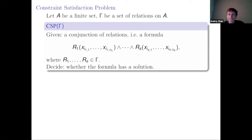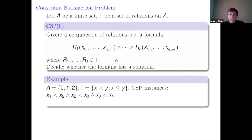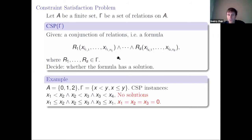Let A be a finite set and let gamma be a set of relations on A, which we call the constraint language. Then for every constraint language gamma, we have the decision problem CSP over gamma: given a conjunction of relations from gamma, we need to decide whether it has a solution. For example, on a three-element domain with two predicates, one instance may have no solution, while another has a solution, for example zero, zero, zero.